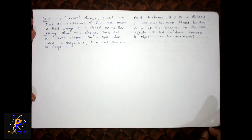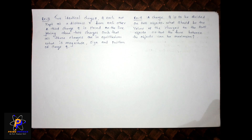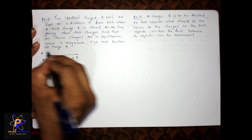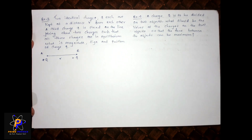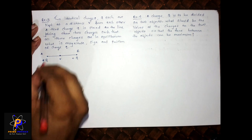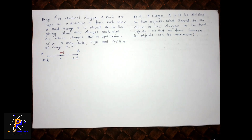Next sum: Two identical charges Q each are kept at a distance R. A third charge q is placed on the line joining the above two charges such that all three charges are in equilibrium. Let point A have charge +Q and point B have charge +Q, distance R between them. The third charge is placed at some position between them — let its distance from A be x and from B be R−x. We need to find the magnitude, sign, and position of this charge.